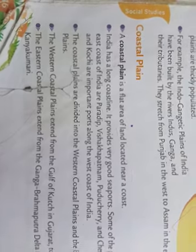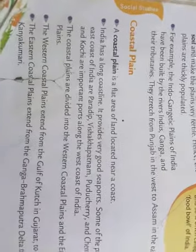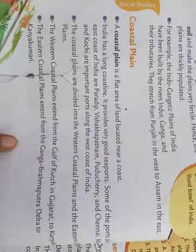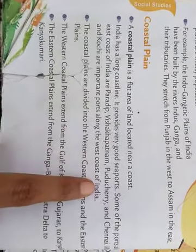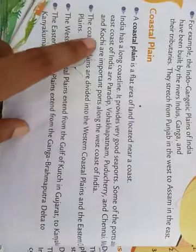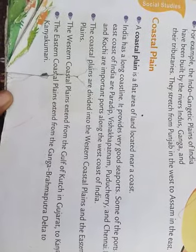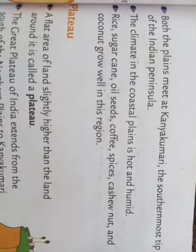The next landform is Coastal Plains. What are Coastal Plains? A coastal plain is a flat area of land near the sea. Our India has a long coastline which provides very good seaports, such as Vishakhapatnam, Puducherry, Chennai, Mumbai, and Kochi. The climate in the coastal plains is hot and humid. Rice, sugarcane, oil seeds, coffee, spices, cashew nut, and coconut grow well in these areas.